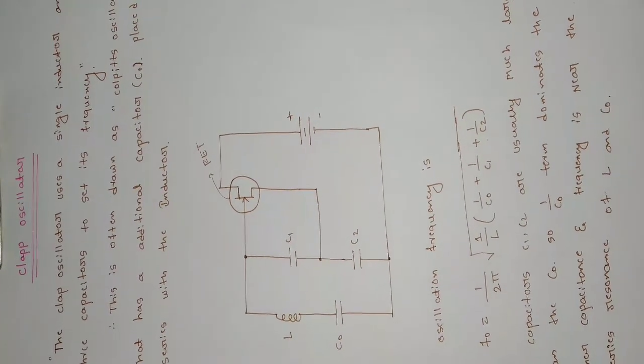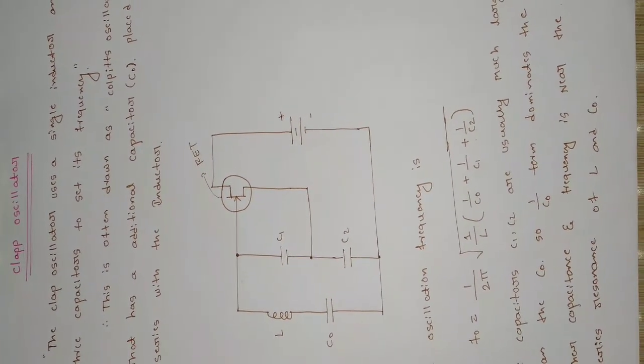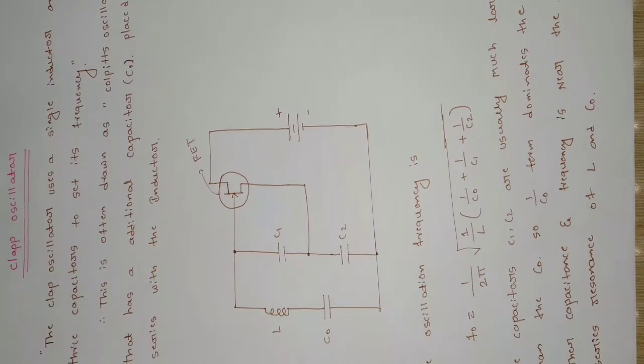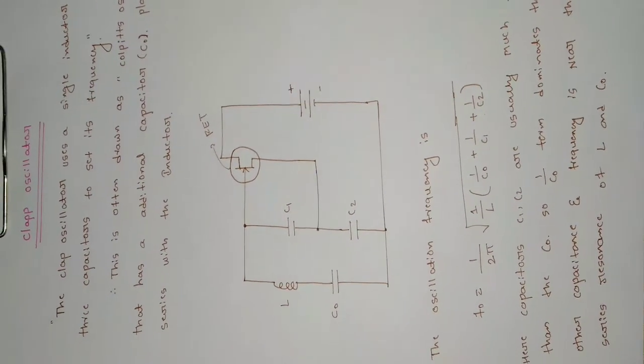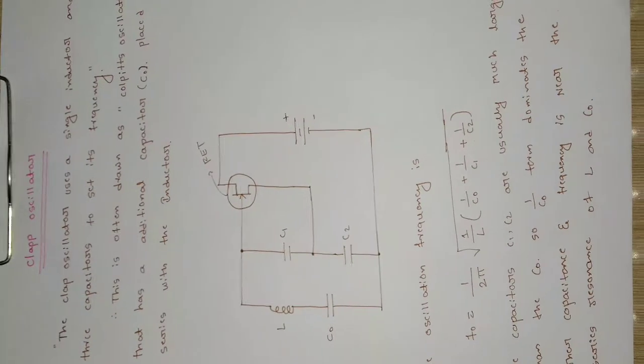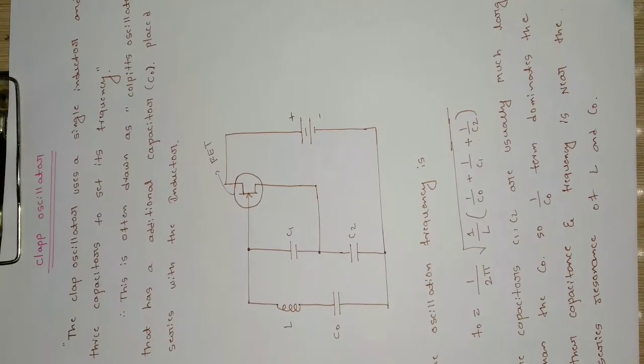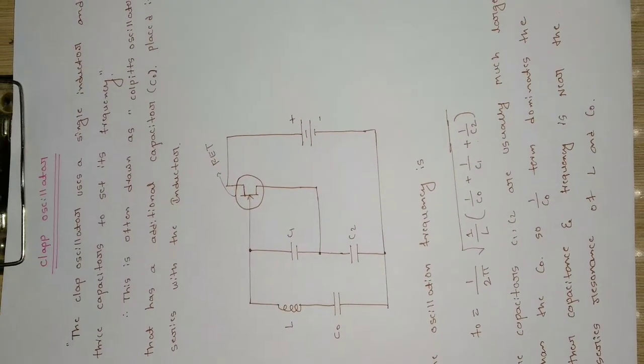This is the modified version of the Colpitts oscillator. The only difference is we are using an extra capacitor, C0, in this circuit. The clap oscillator uses a single inductor and three capacitors to set its frequency.